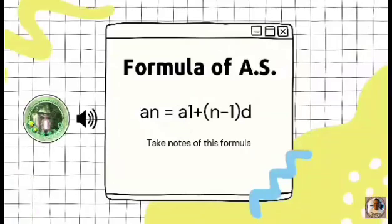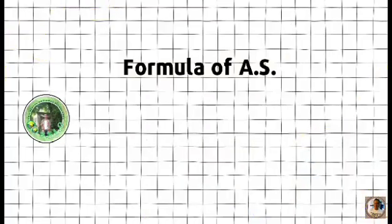The formula of Arithmetic Sequence is: a sub n is equal to a sub 1 plus the quantity of n minus 1 times the common difference. Take notes.